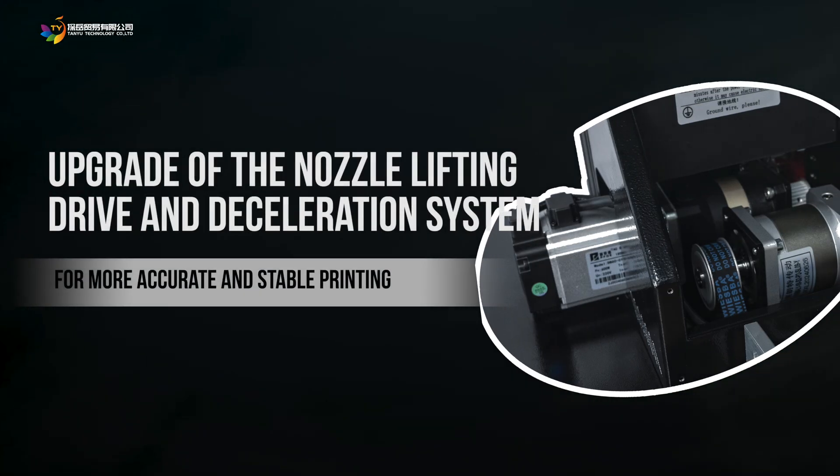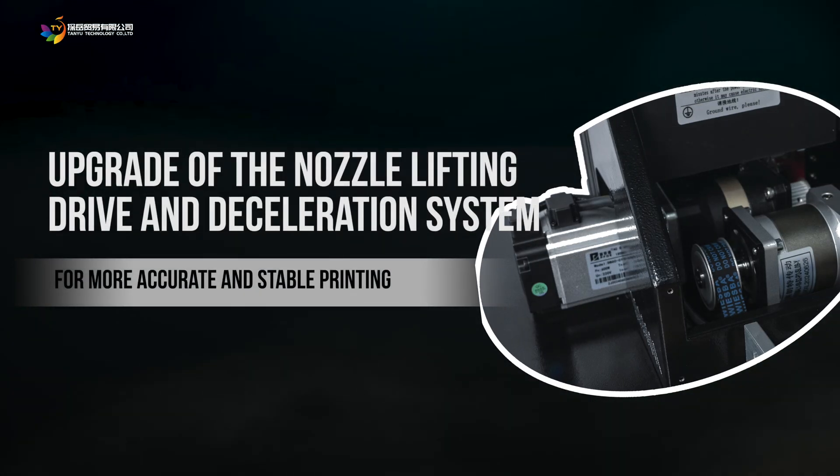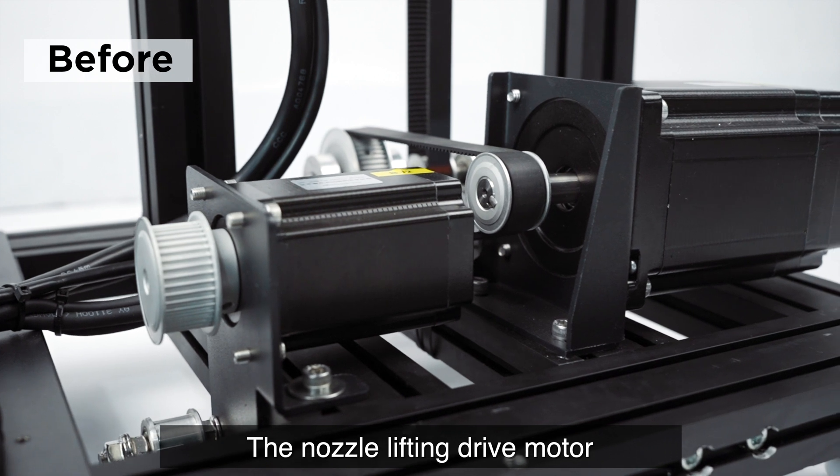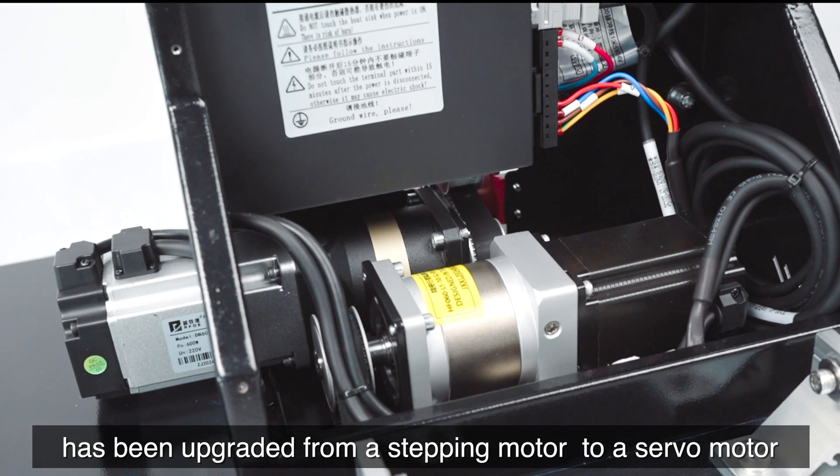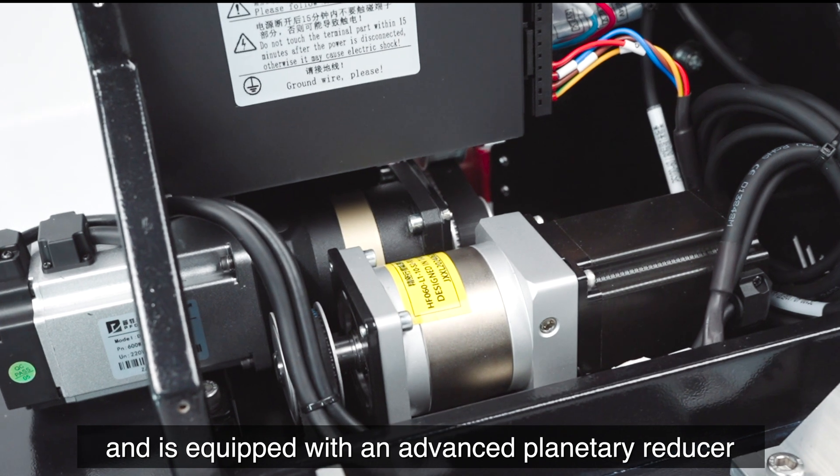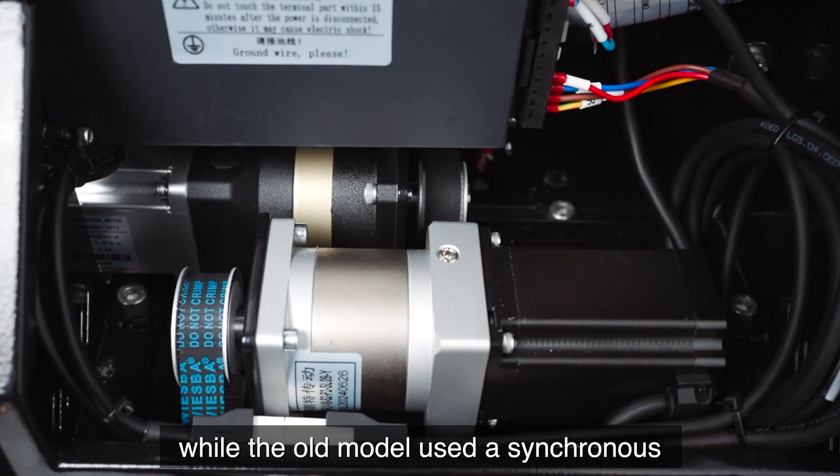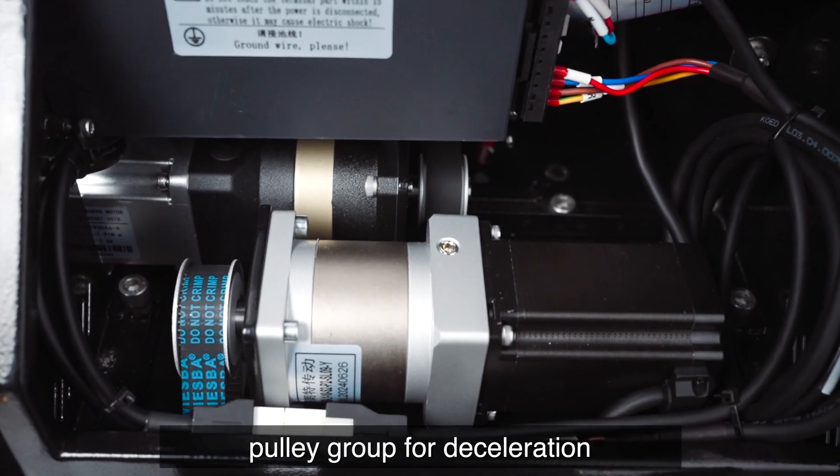Upgrade of the Nozzle Lifting Drive and Acceleration System for more accurate and stable printing. The nozzle lifting drive motor has been upgraded from a stepping motor to a servo motor, and is equipped with an advanced planetary reducer, while the old model used a synchronous pulley group for deceleration.